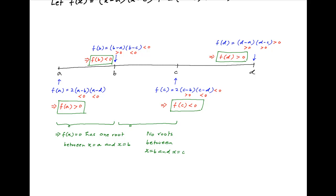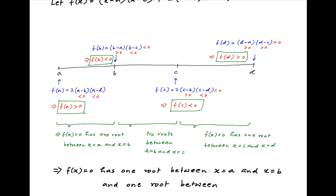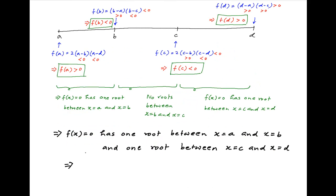Finally, note that the function again changes sign between x equal to c and x equal to d. Therefore, the equation f(x) equal to 0 has a root between these two points. To summarize, the equation f(x) equal to 0 has one root between x equal to a and x equal to b, and another root between x equal to c and x equal to d. In other words, f(x) equal to 0 has two distinct real roots, which is the required answer.